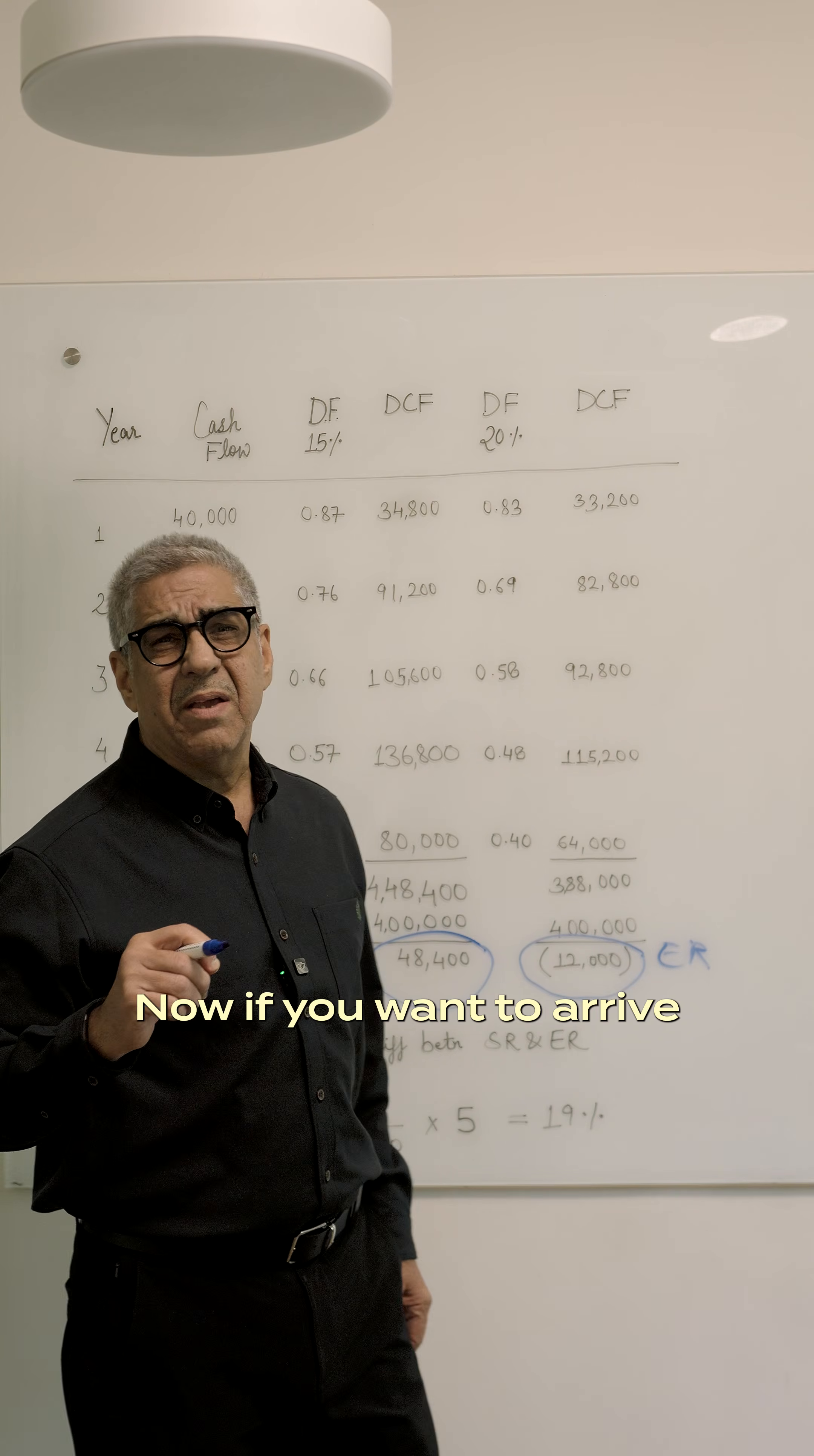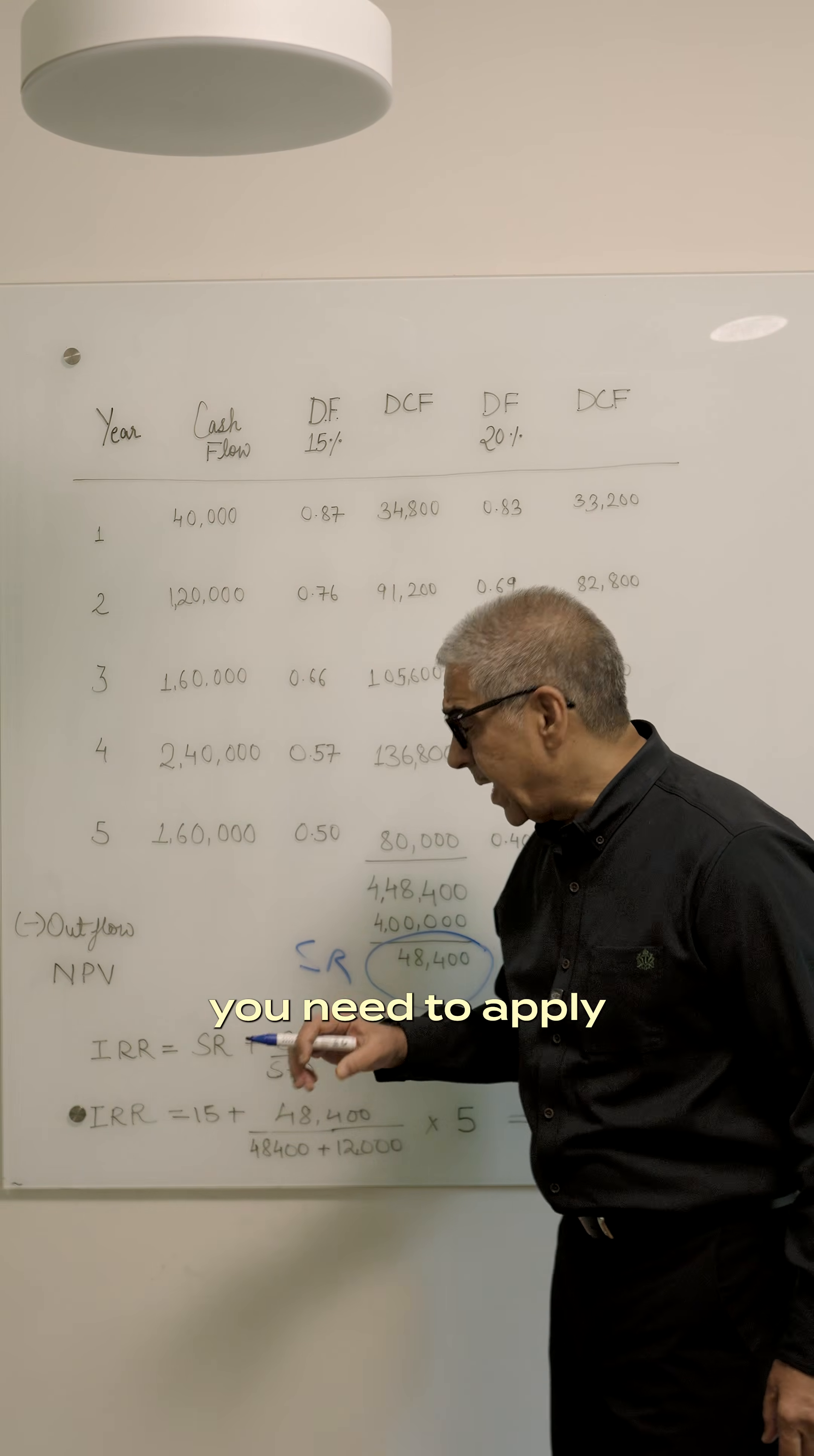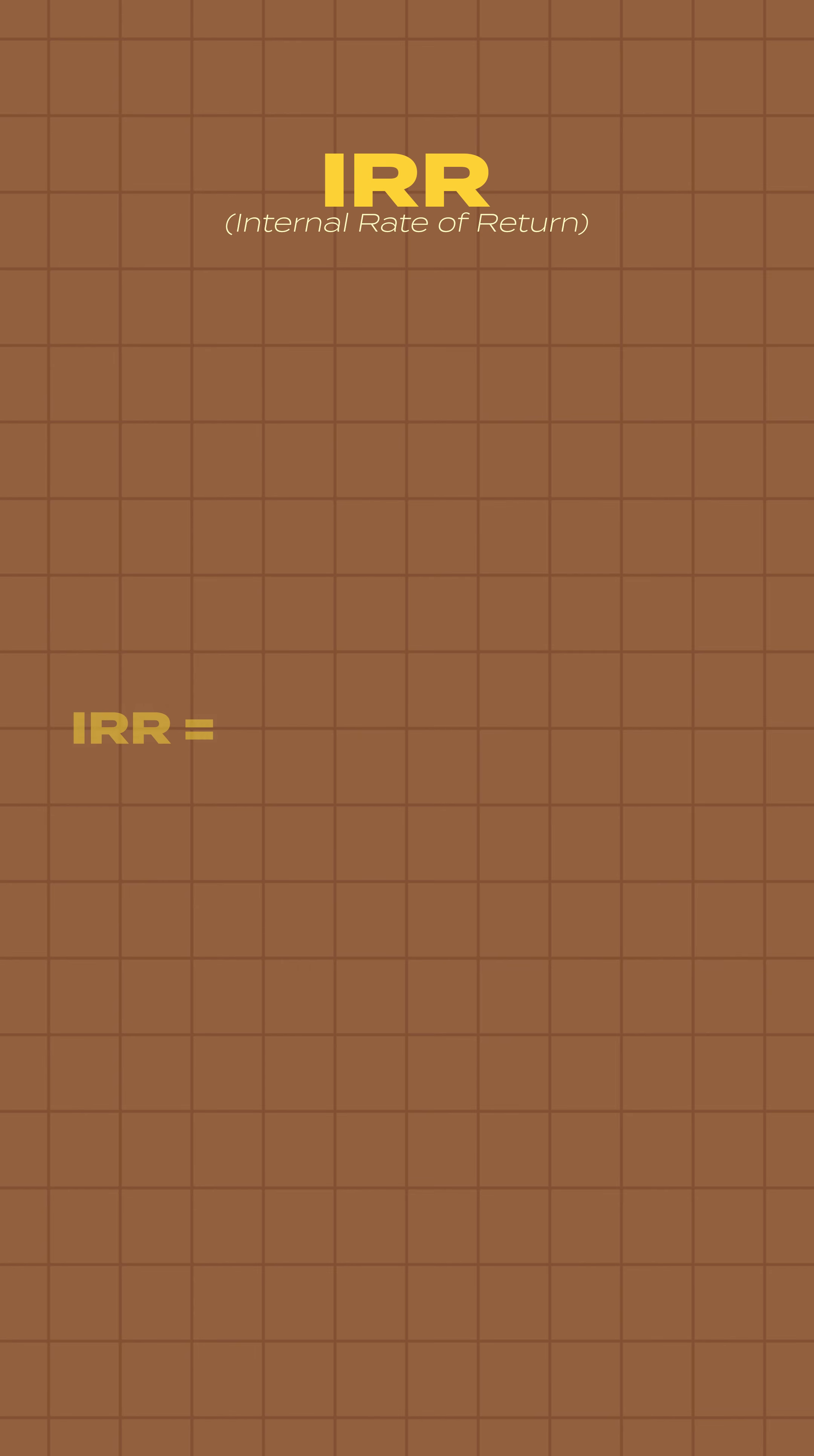Now, if you want to arrive at the IRR, you need to apply a simple formula. IRR is equal to start rate plus surplus divided by surplus plus deficit.